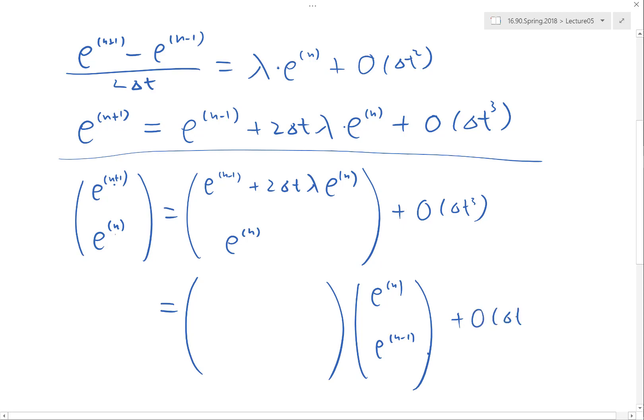And what is the matrix here? 2 delta t lambda, 1, 1, 0, all right?